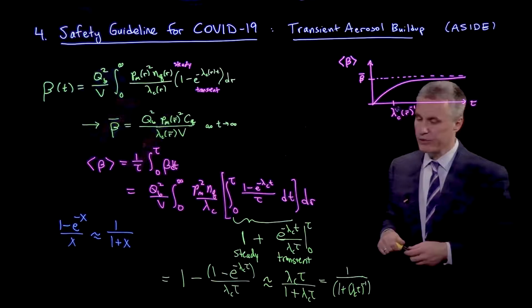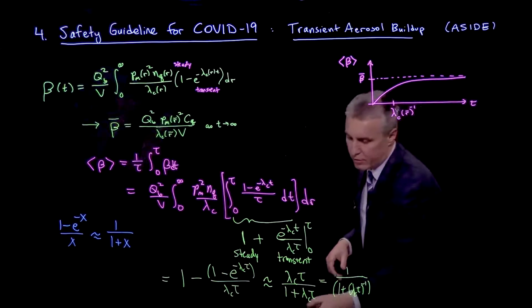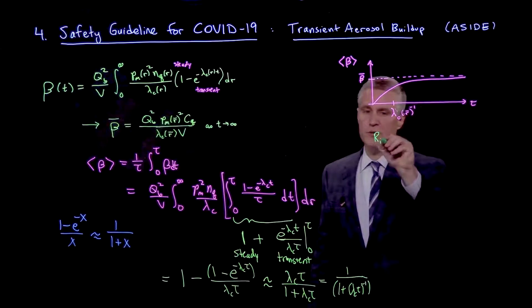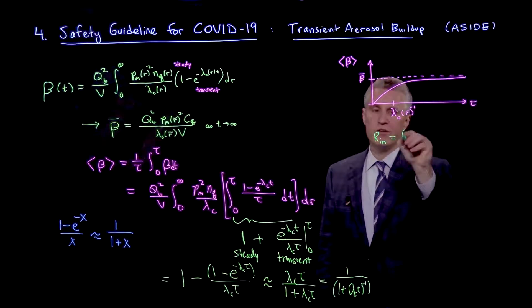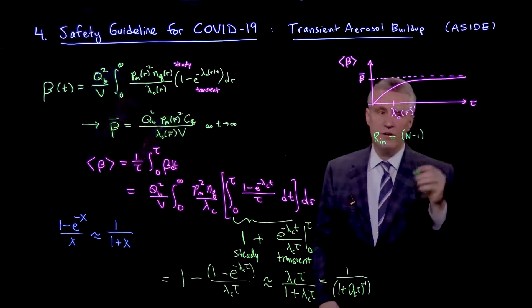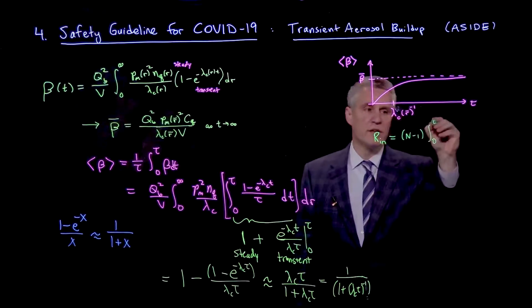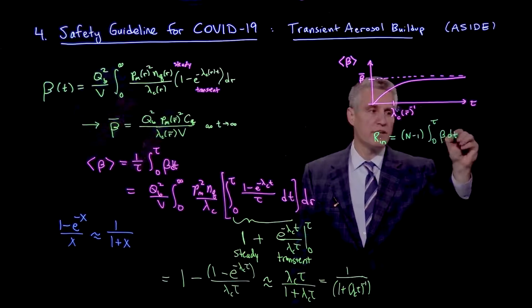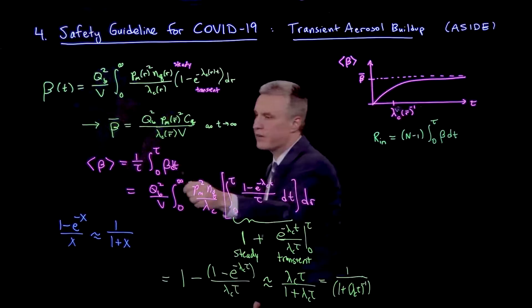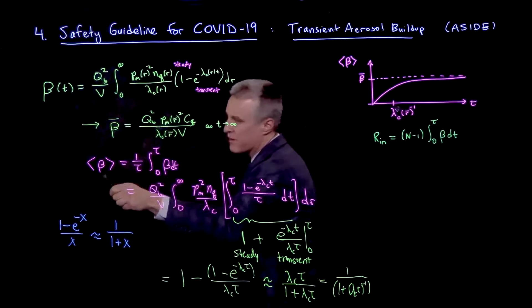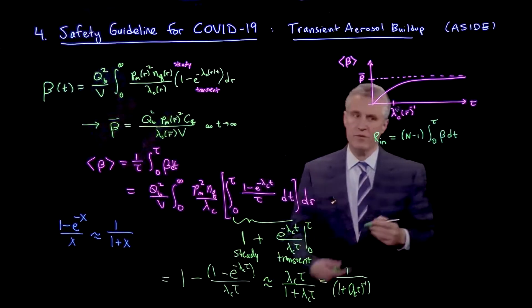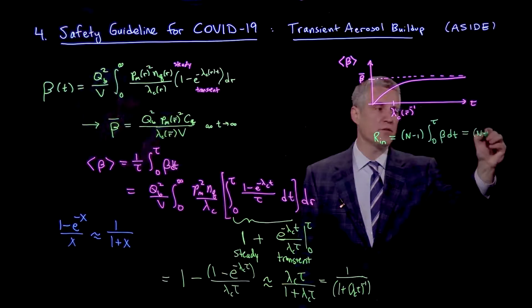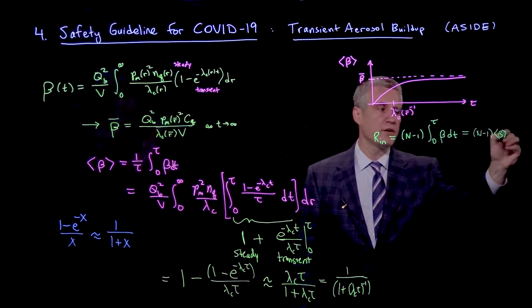So remember that the bound we have is on the indoor reproductive number, which is n minus 1 times the integral to tau of beta dt. So what is that? That's just the sort of time average beta times tau.